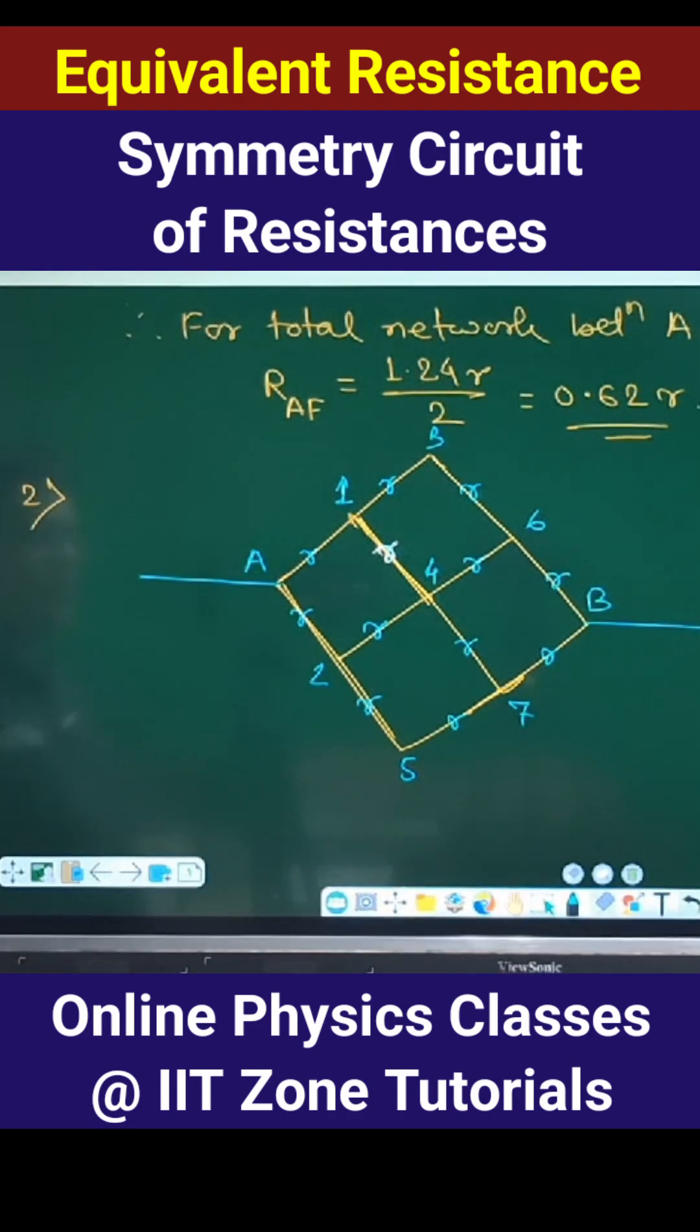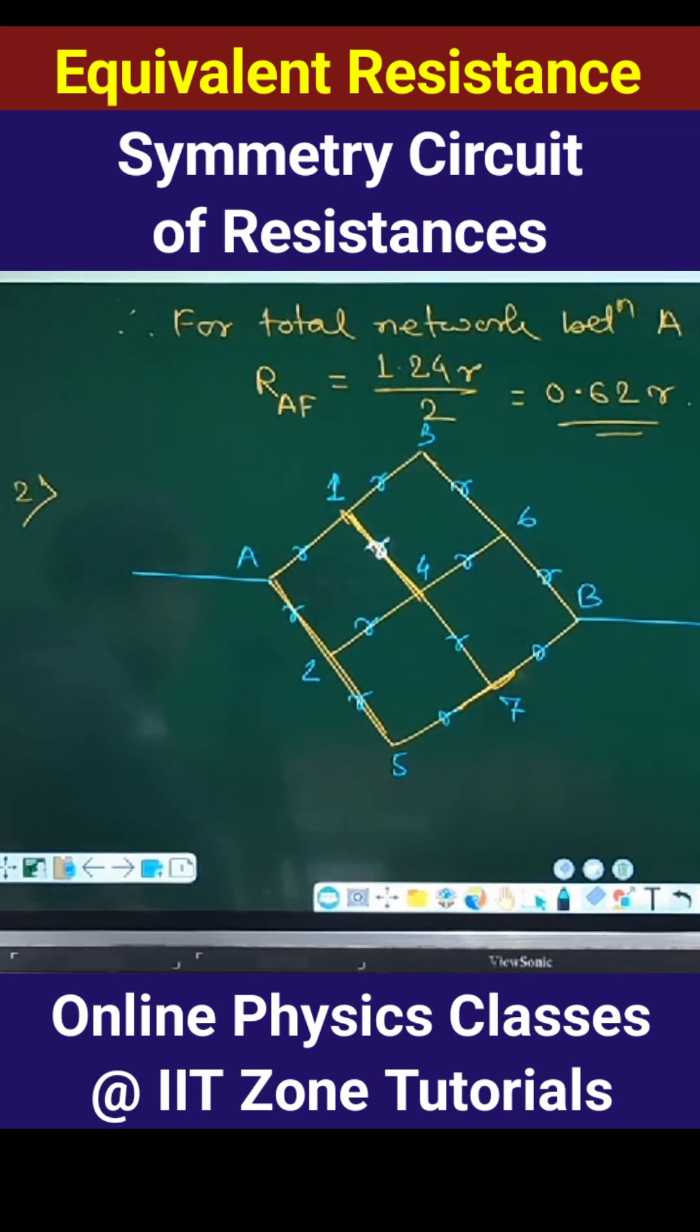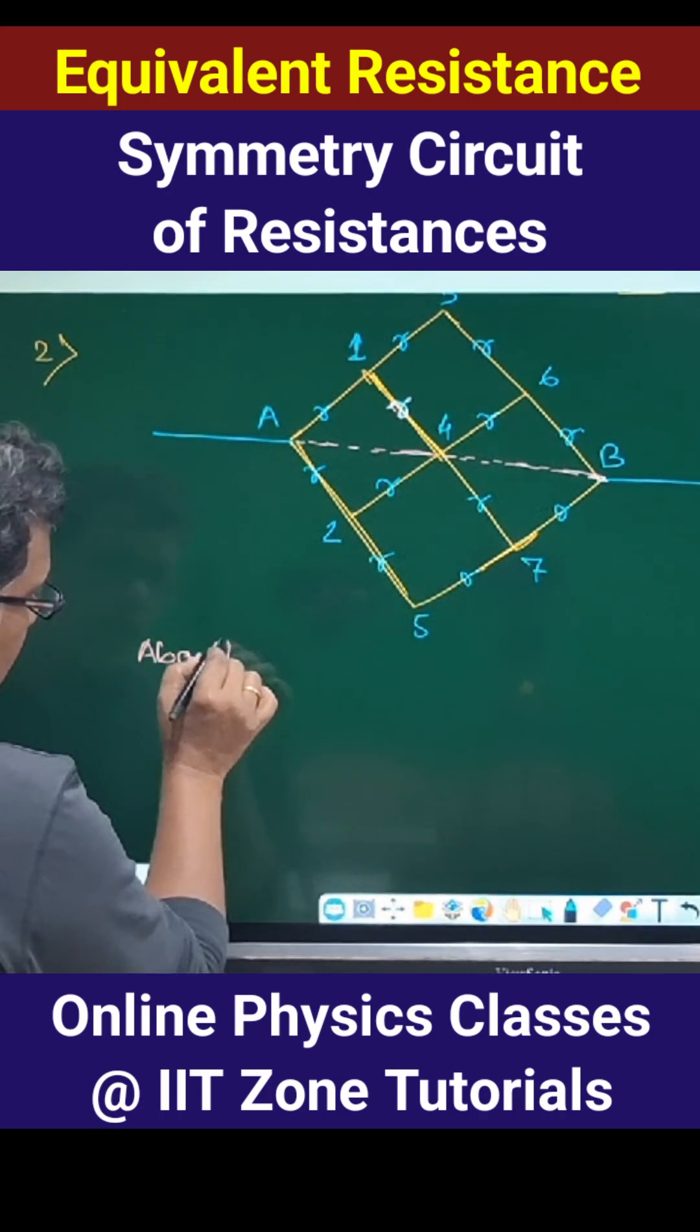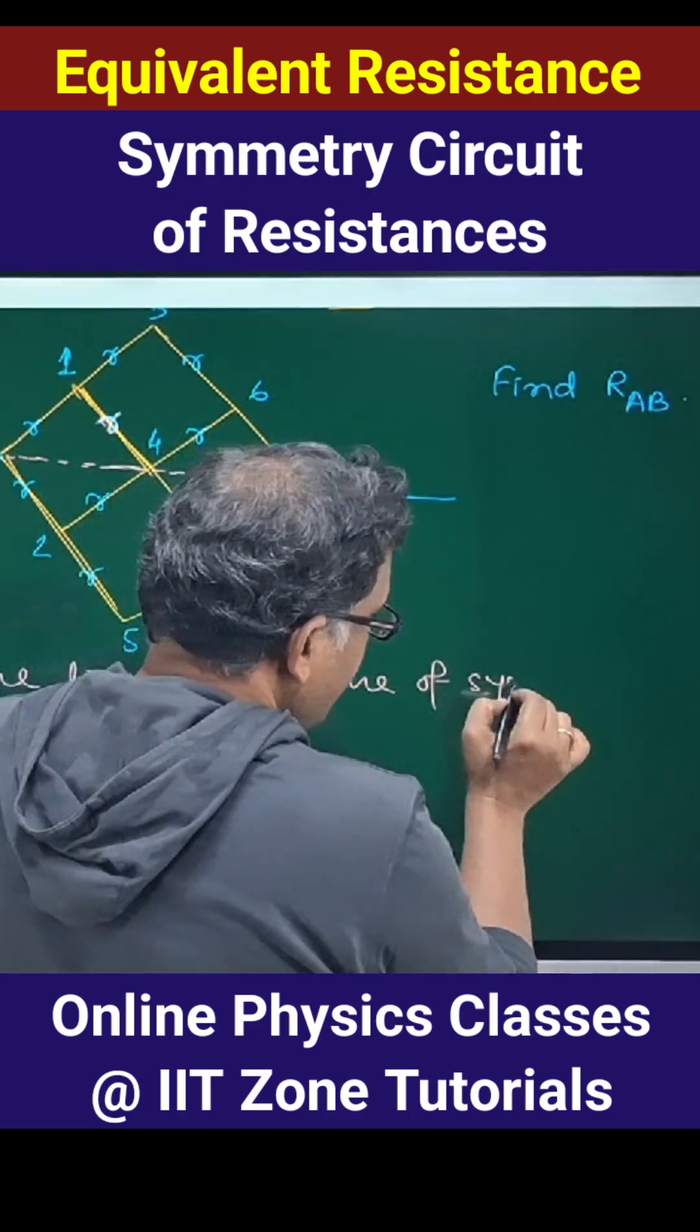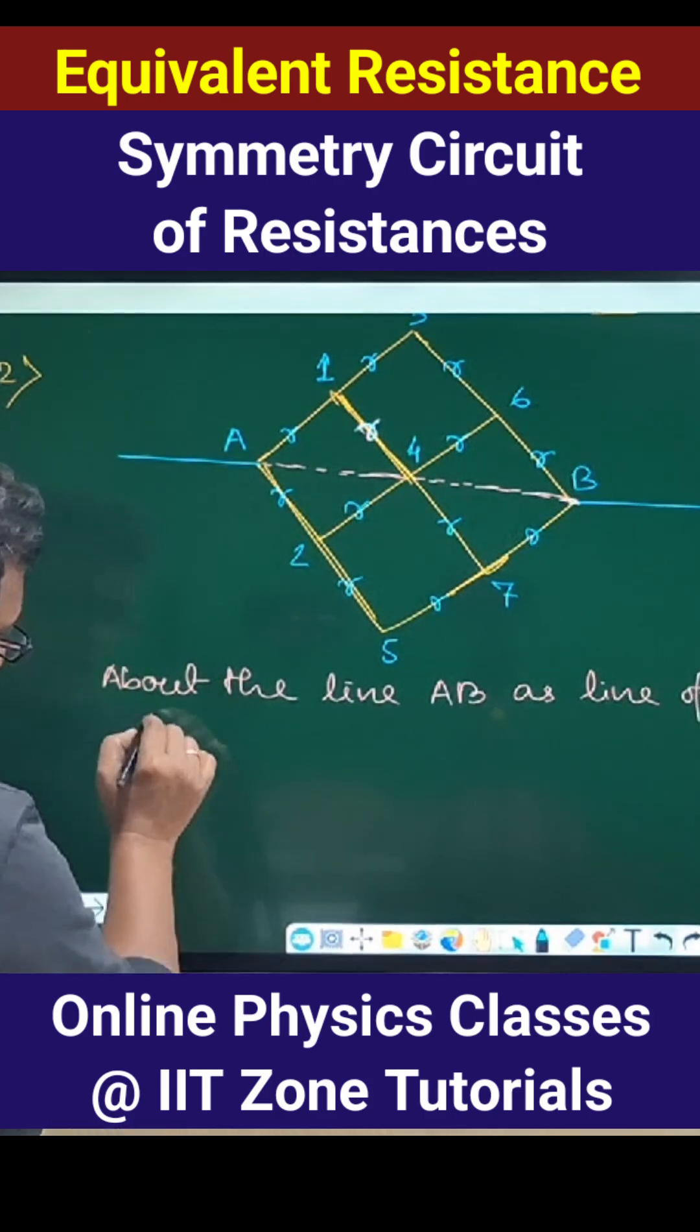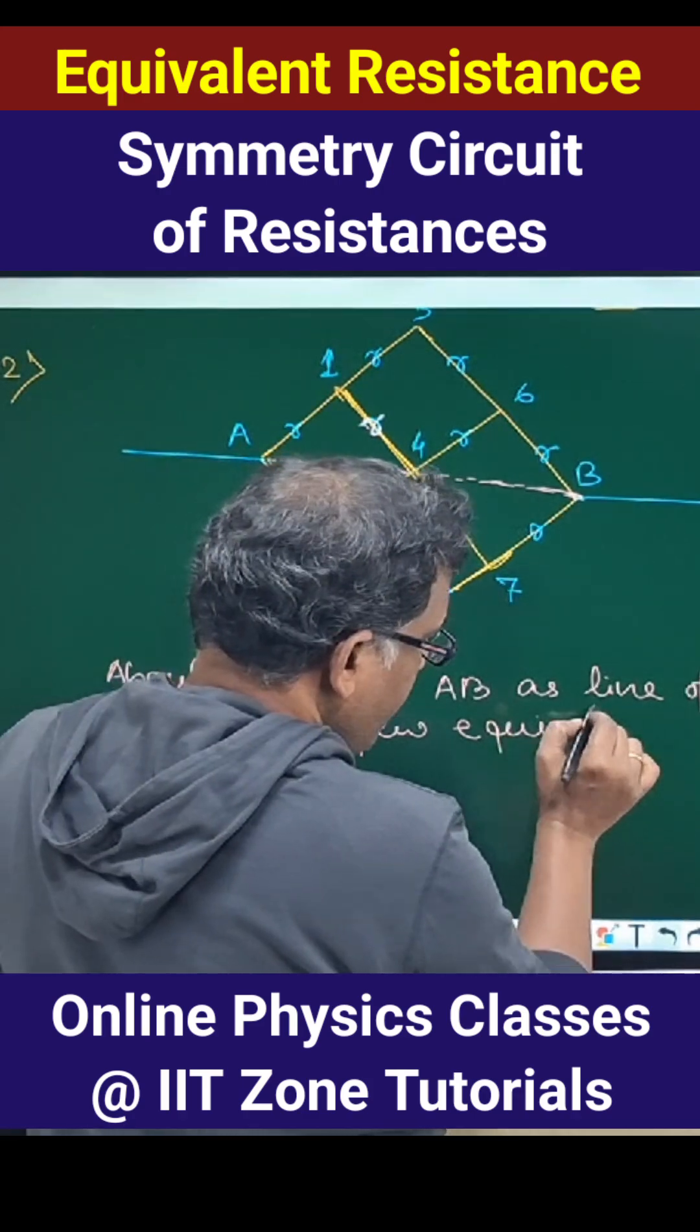So if you consider the line a3, ab is taken as the line of symmetry. If you write down about the line ab as symmetrical line, as line of symmetry, there are few equipotential points.